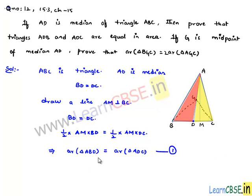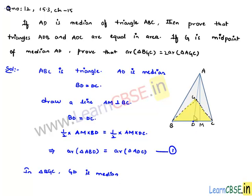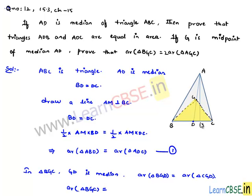The median divides the area of the triangle into two equal halves — this is the first proof. Similarly, in triangle BGC, since D divides BC into two equal halves, GD is the median. From the above proof, area of triangle BGD is equal to area of triangle CGD, and area of triangle BGC equals area BGD plus area CGD.